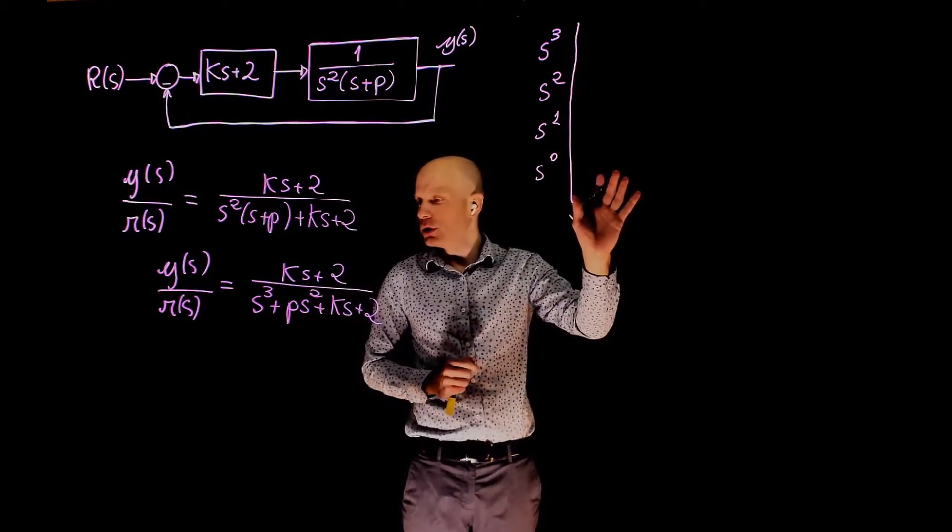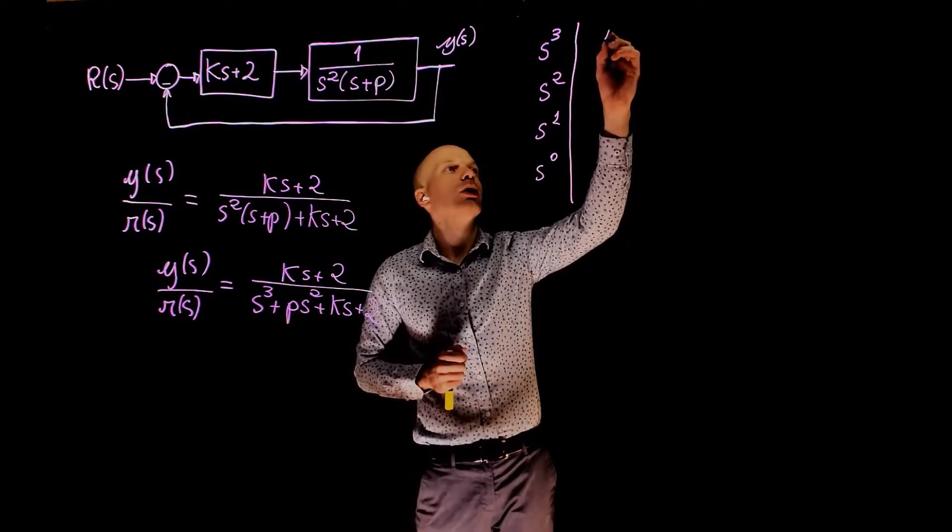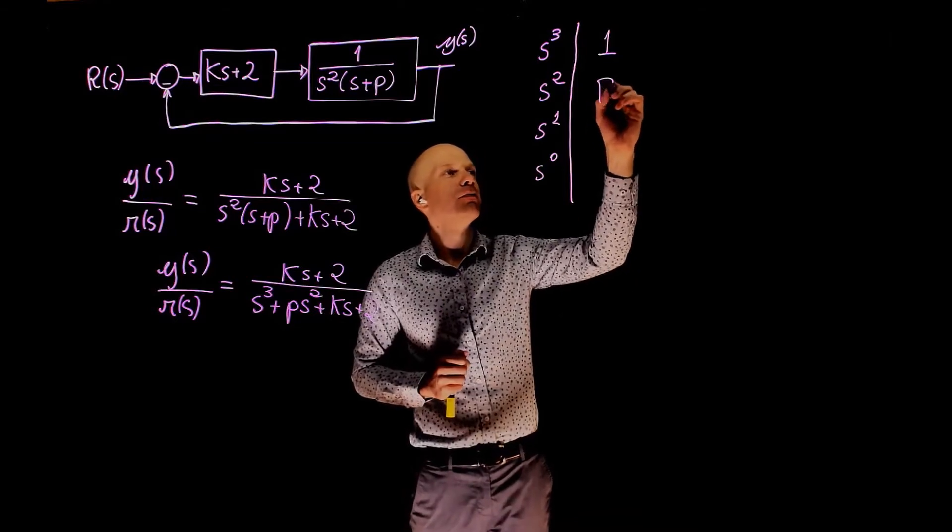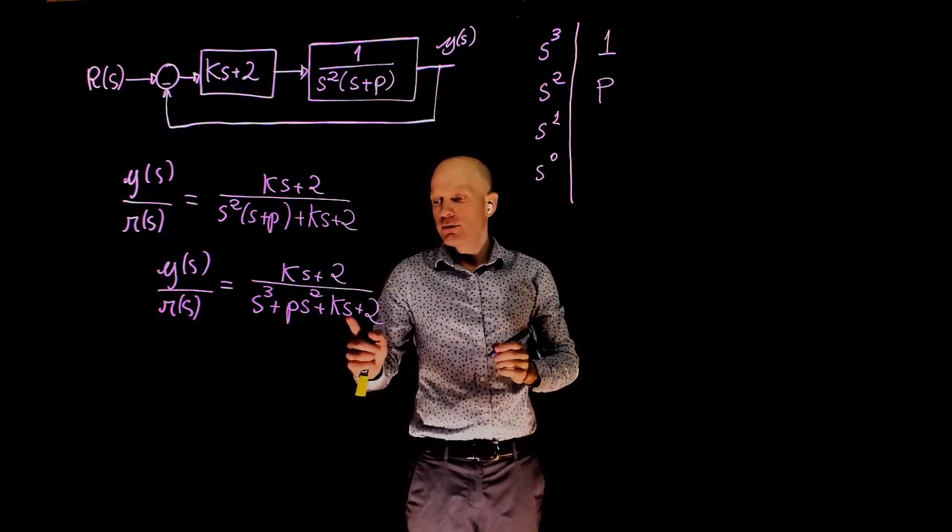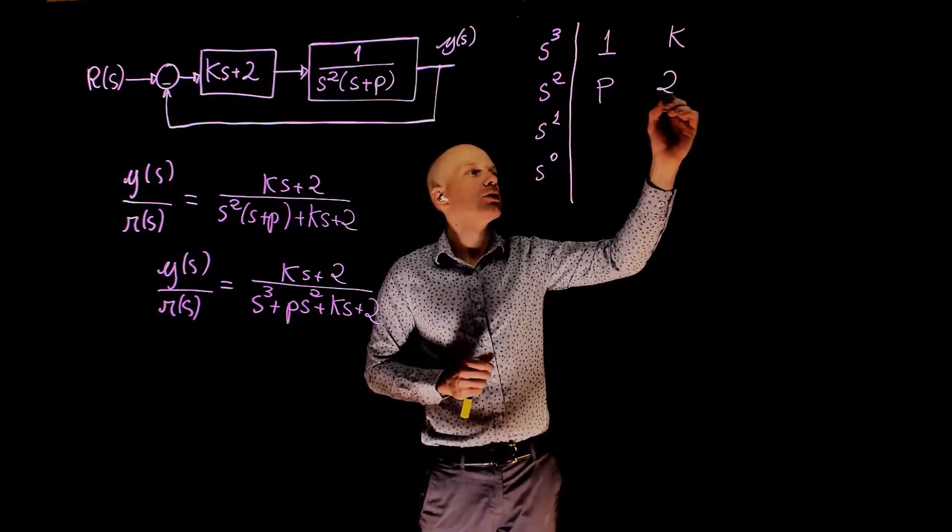And now we can put the coefficients in the matrix. Coefficient of s to the power of 3 is 1, s to the power of 2 is p, s to the power of 1 is k, and s to the power of 0 is 2.